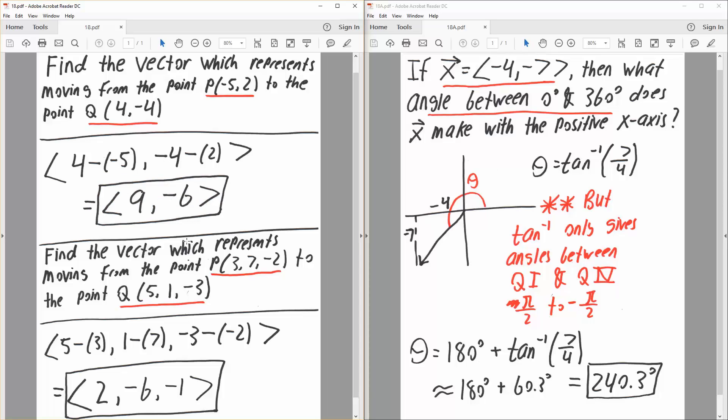Next problem is find the vector which represents moving from the point P(3, 7, -2) to the point Q(5, 1, -3). It's the same thing as the previous problem, instead now we have a z-axis. So we go from end to start to get the vector.